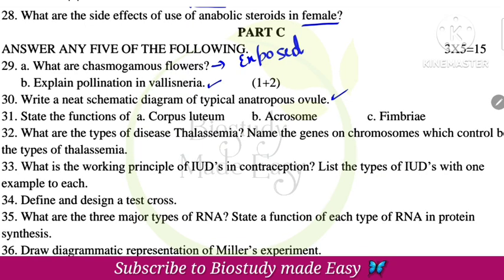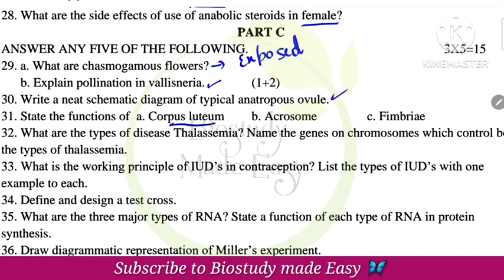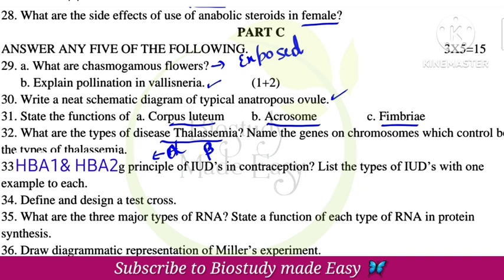Three mark questions: State the functions of corpus luteum — it secretes progesterone, the pregnancy hormone. The acrosome function is lysis of the ovum layers, helping the male nuclei penetrate. Fimbria receive the ovum from the ovary. What are the types of thalassemia? Alpha thalassemia — genes HbA1 and HbA2 on chromosome 16 — and beta thalassemia with gene HbB.